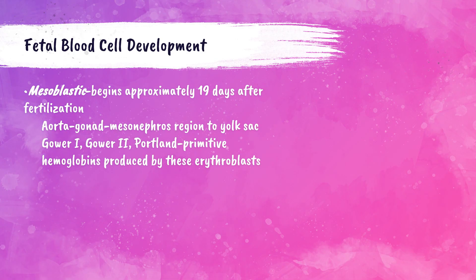The first phase of fetal blood cell development is called the mesoblastic phase, which begins as early as 19 days after fertilization. It's called mesoblastic because cells are formed outside of the embryo in the mesenchyme of the yolk sac. The yolk sac provides nourishment and circulates gases between the mother and the embryo, also producing what becomes the umbilical cord and reproductive organs. It has a lining of mesoderm, and this is where fetal blood cell development takes place.